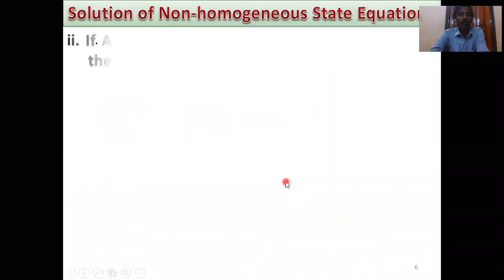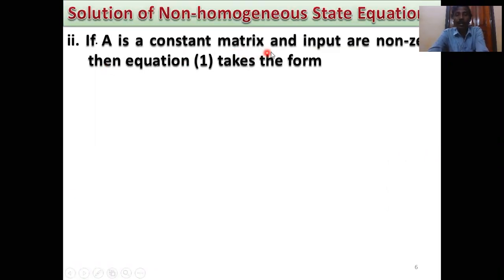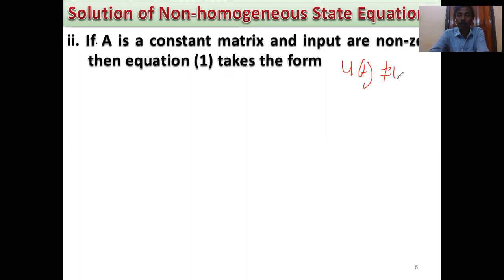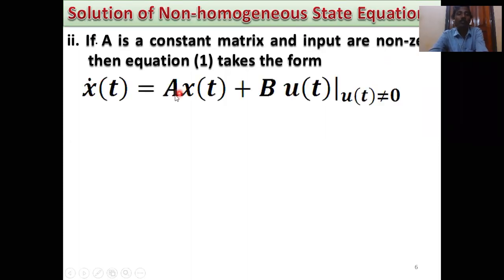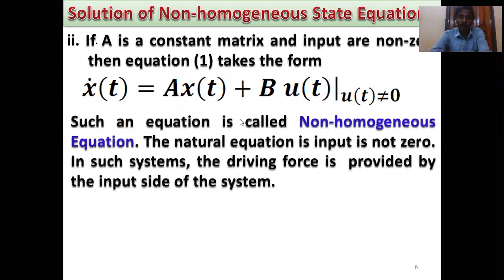If A is a constant matrix and input is non-zero — U(t) ≠ 0 — then equation 1 takes the form: Ẋ(t) = AX(t) + BU(t), where U(t) ≠ 0. Such an equation is called the non-homogeneous state equation. In such systems, the driving force is provided by the input side of the system — input is the driving force supplier.